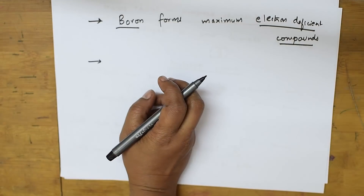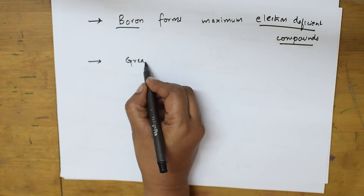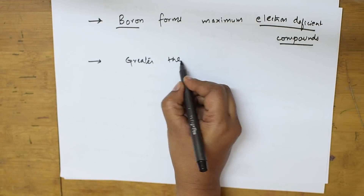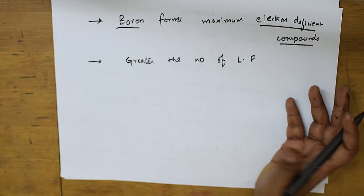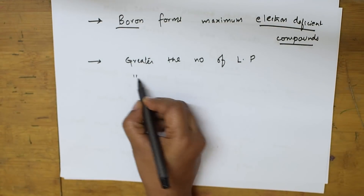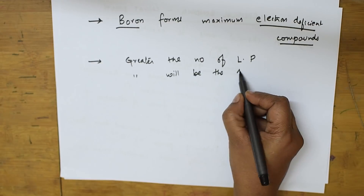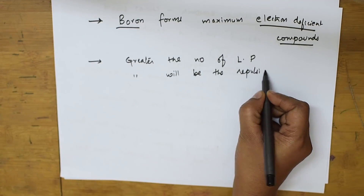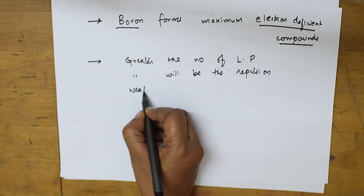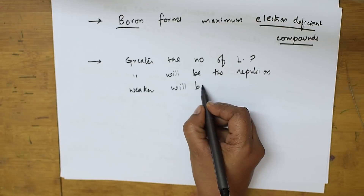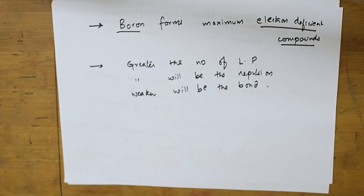Greater the number of lone pairs between two bonding atoms, greater will be the repulsion. As a result, weaker will be the bond. Remember this concept.